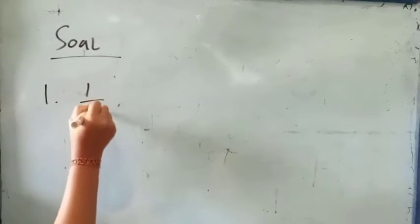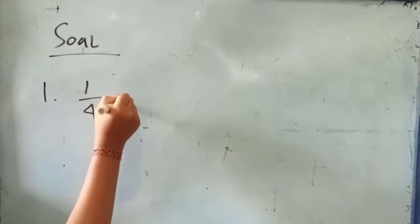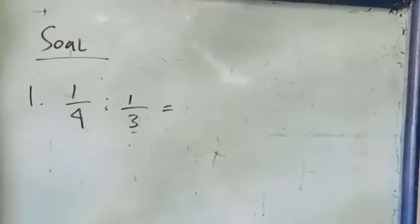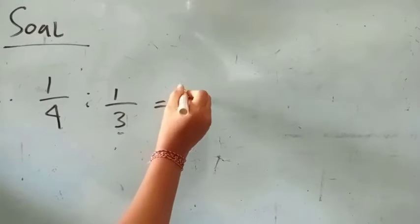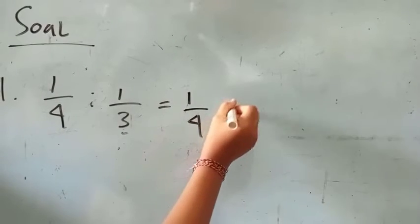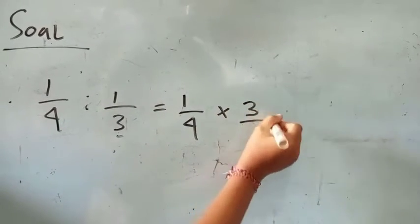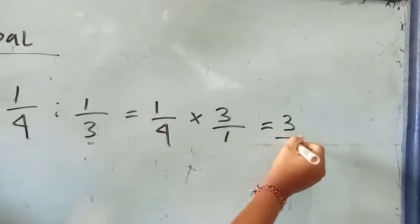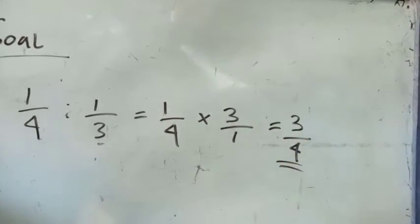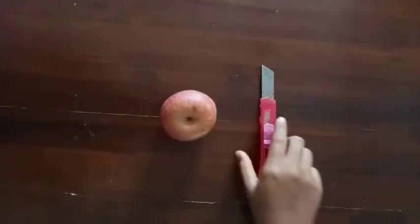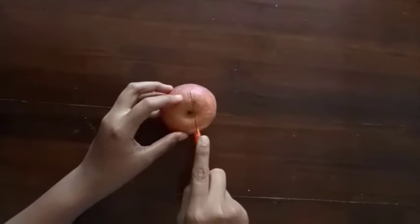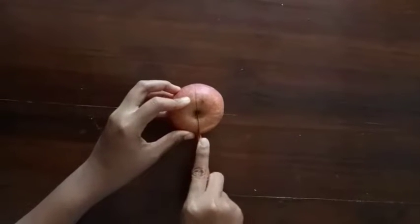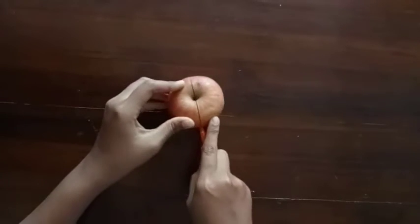Untuk contoh soal yang pertama, pembagian pecahan 1/4 dibagi 1/3. Jika dikalikan silang yaitu 1/4 dikali 3/1 — penyebut dipindahkan ke atas baru dikalikan — dan hasilnya 3/4. Untuk alat peraga di sini menggunakan buah apel. Yang pertama, apel dipotong menjadi 2 bagian.